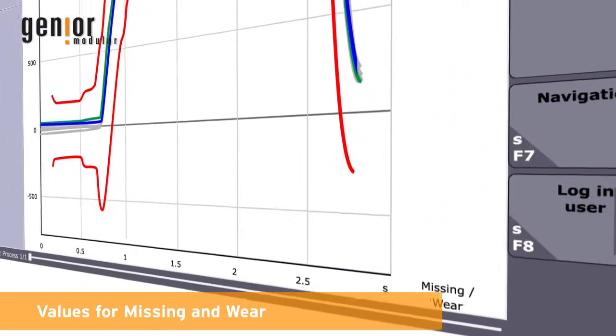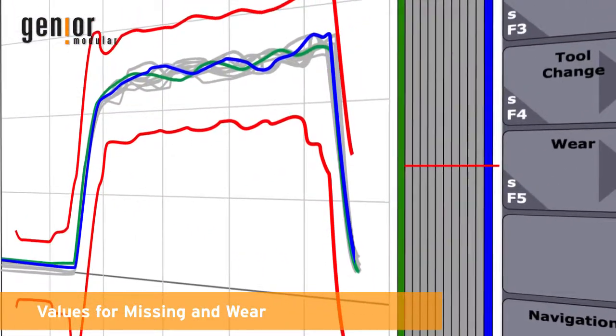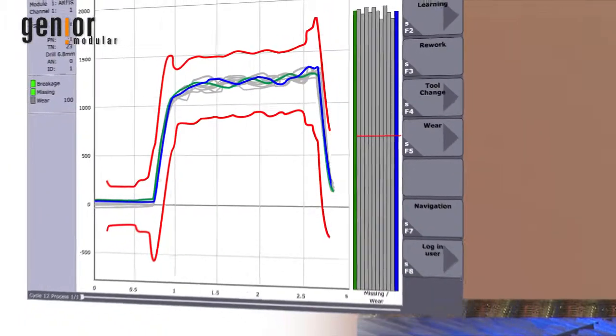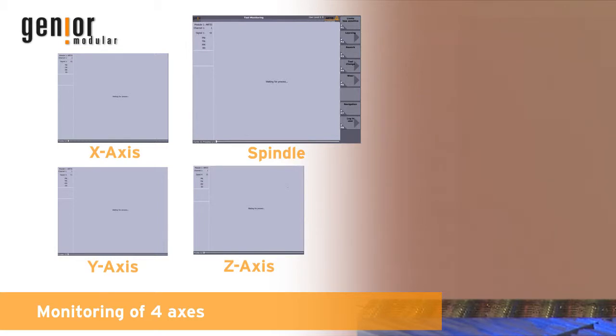An additional evaluation of spindle data for missing tool or wear. Genia Modular monitors several axes simultaneously.